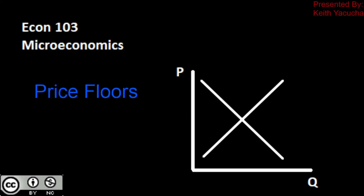Welcome back to Econ 103, Introduction to Microeconomics. In today's video, we're going to be taking a look at a brief overview of how to compute price, quantity exchange, and surplus analysis underneath a price floor. The expectation is that you've already watched the video on price floors — that is the price control video — so you have a good understanding of what's going on in all of those parts. This is just the walkthrough, the application, to make sure you know how to actually apply the problem.